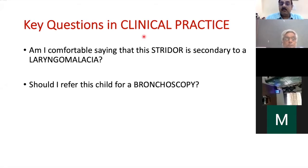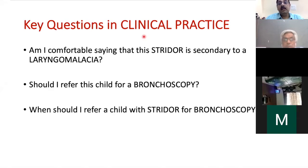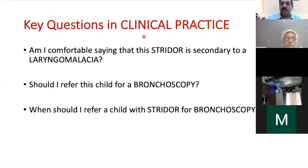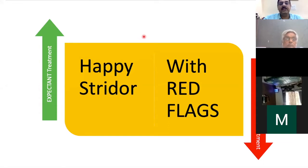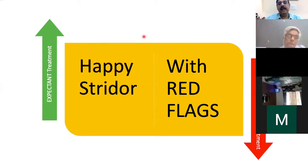The better question is: when should I refer a child with stridor for a bronchoscopy? I divide children with congenital persistent stridor into two broad groups. One group is called 'happy striders' — they are doing well, gaining weight, have mild stridor without an expiratory component, the child is comfortable, feeding well, growing well, and you have a good follow-up and rapport with parents.